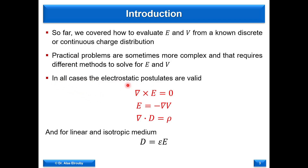In all cases, the electrostatic postulates — the laws that govern the solution of electrostatic fields — are three equations. The first represents the conservative electric field property. The second is the relationship between the electric potential and the electric field: minus gradient. The third is Gauss's law: the divergence of the displacement field equals volumetric charge density. If the field exists in a linear and isotropic media, the relationship between displacement field and electric field is the permittivity epsilon.